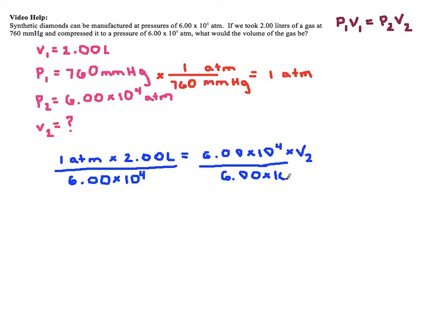All righty. So I've got 1 times 2 divided by, make sure that this 6.0 times 10 to the 4th, you put in parentheses if you're going to write times 10 to the 4th, because if you have multiplication in the denominator, you've got to put it in parentheses. So the V2 I get is 3.3333333 times 10 to the negative 5th, which makes sense. Sometimes it should be super small.